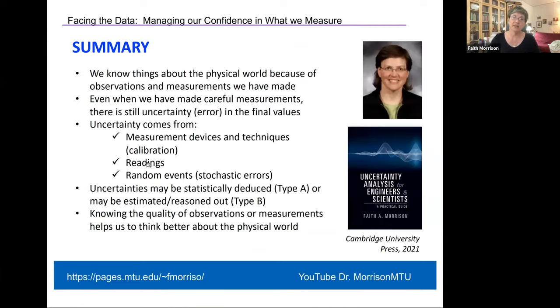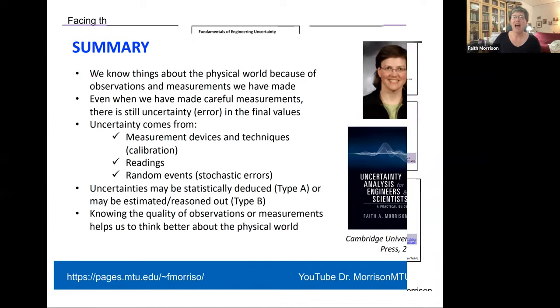Six orders of magnitude is not a subtle difference. So we can know some very firm things, even as we're uncertain about some of the details. So I've divided uncertainty into measurement reading and random error and discussed those a little bit. Those are two different types of errors that are both very commonly present and knowing the quality of our measurements helps us to think better about what we learned from the physical world.